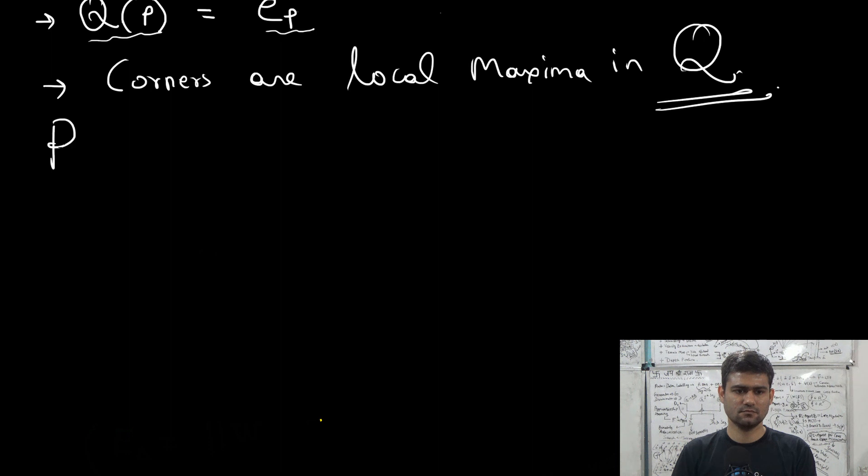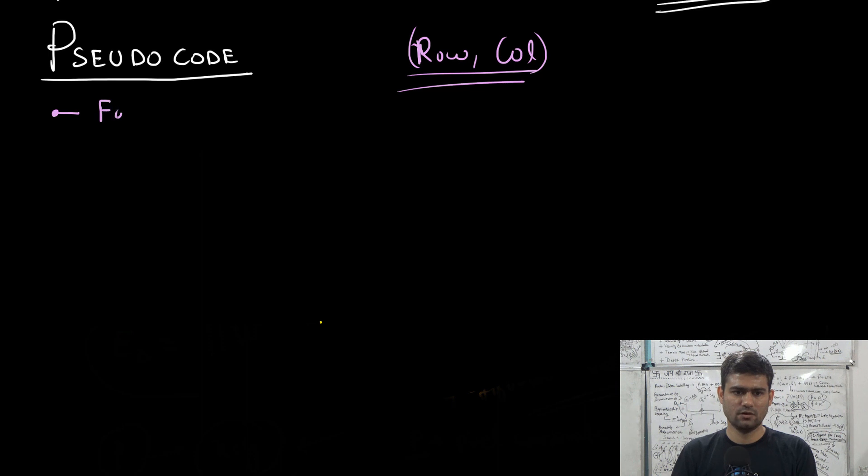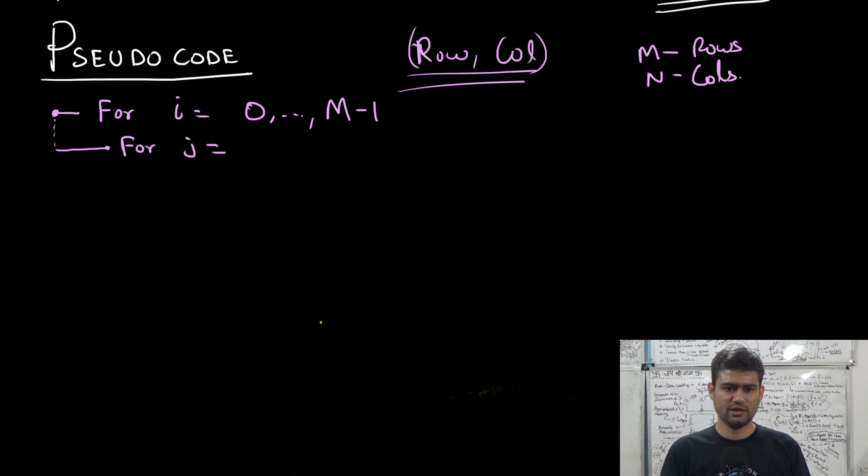So now we can write the pseudocode. We will write the pseudocode in terms of the indexing i,j, so we will use row, column index, because this is what you will actually be implementing in your computer. So we have for i equal to 0 to m minus 1, where m is the number of rows and n is the number of columns. We will have nested loop for j equal to 0 to n minus 1, for each delta_k, where k is 0, 1, 2 and 3. So k takes 4 different values.